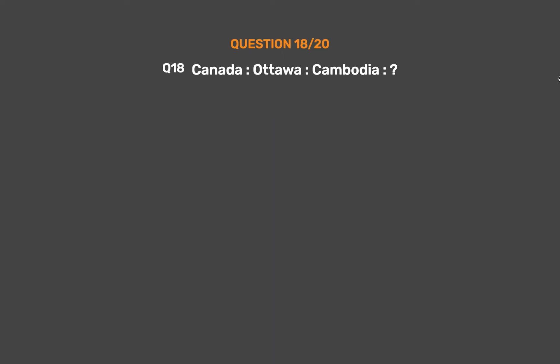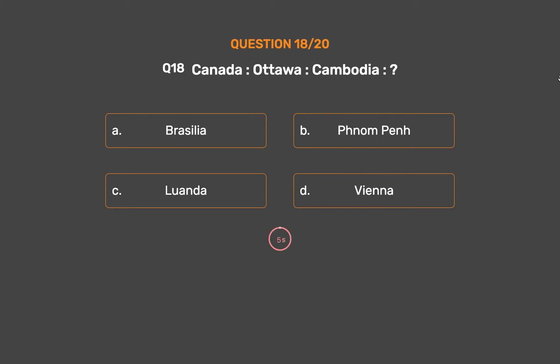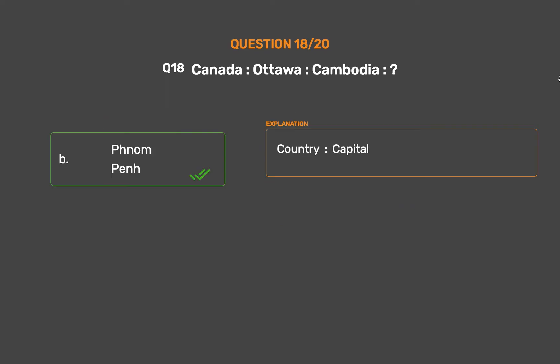Question No. 18. Canada : Ottawa :: Cambodia : ? Option A: Brasilia. Option B: Phnom Penh. Option C: Luanda. Option D: Vienna. The correct answer is Option B, Phnom Penh. Country : Capital.